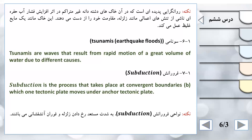فرورانش - Subduction: Subduction is the process that takes place at convergent boundaries, where one tectonic plate moves under another tectonic plate. فرورانش فرآیندی است که در مرزهای همگرا اتفاق می‌افتد، جایی که یک صفحه تکتونیکی زیر صفحه تکتونیکی دیگری حرکت می‌کند. نواحی فرورانش به شدت مستعد رخداد زلزله و فوران آتشفشانی هستند.